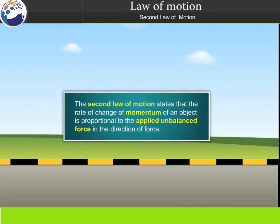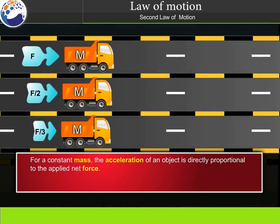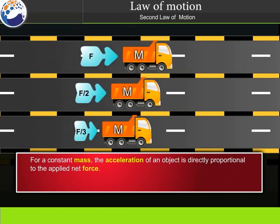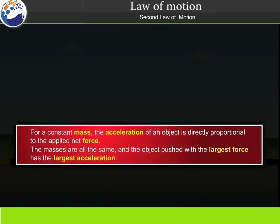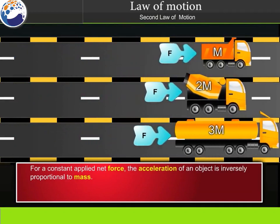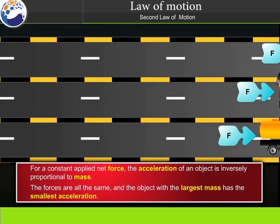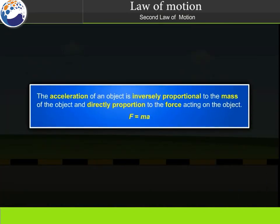The second law of motion states that the rate of change of momentum of an object is proportional to the applied unbalanced force in the direction of force. For a constant mass, acceleration is directly proportional to the applied net force. For a constant applied net force, acceleration is inversely proportional to mass. Mathematically, the second law is written as F equals M times A.